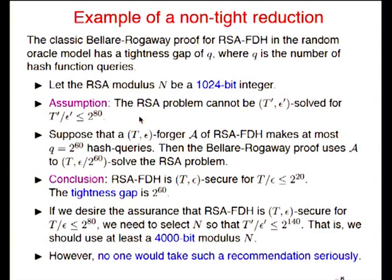In practice, no one takes these recommendations seriously. I don't know of a single standardized protocol supported by a non-tight proof where the parameters were increased because the proof was non-tight. If your parameter is AES in hardware and you have a non-tight proof assuming AES is a pseudorandom function, you can't easily increase AES parameters. If your protocol is pairing-based and uses BN curves at the 120-bit level, you can't increase those parameters — you need curves with the right embedding degree, and these may not even exist.